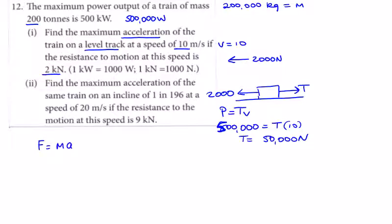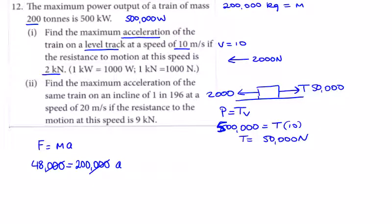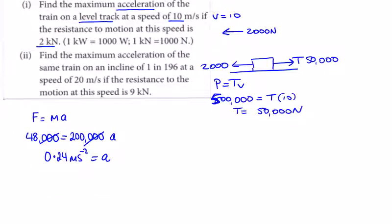We're looking for the acceleration. Resolving forces equals mass times acceleration. The resolved forces are 50,000 going forward minus 2,000 opposing, giving 48,000. That equals the mass of 200,000 times acceleration a. Cancelling three zeros: 48 over 200, which is 24 over 100, so acceleration is 0.24 m/s².